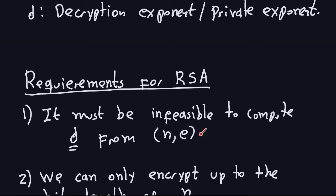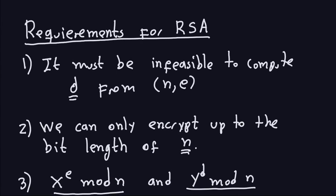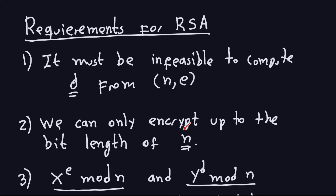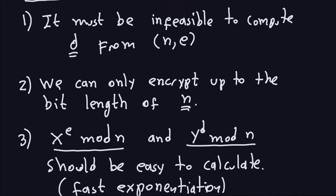Another requirement is that we can only encrypt up to the bit length of N, because we take everything modulo N. The plain text bit length should be less than N, so in theory we want to choose N to be a large number. Another important point is that encryption is x^e mod N and decryption is y^d mod N.